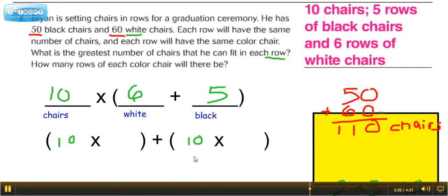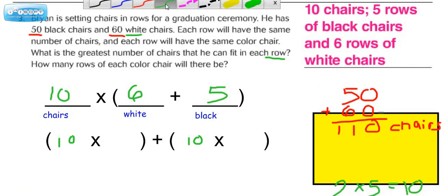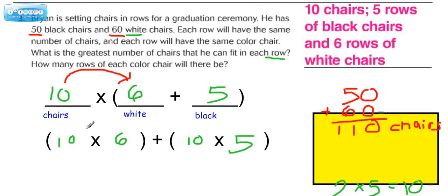We use the distributive property. Now if we go back to this method of writing it, we can put the 6 here and the 5 here, and it's kind of the same idea. The reason why this is also another version of distributive property is because really this means 10 times 6, which is represented here, plus this means 10 times 5, which is represented here.